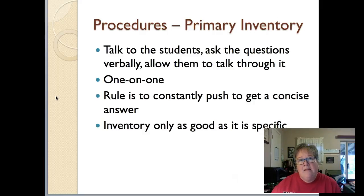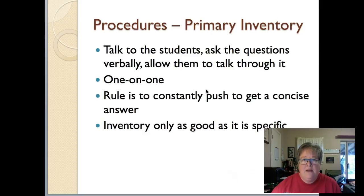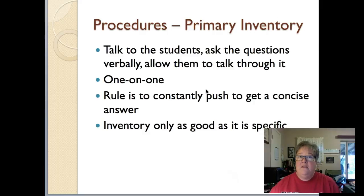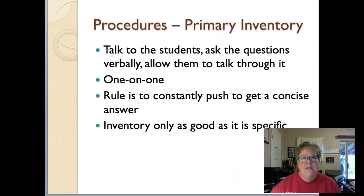With primary level students, ask them the questions verbally and allow them to talk through it. Best to do this one-on-one, and you want to take down what they say. The rule is to constantly push to get a concise answer — get as specific as you can. For example, do you like sports? Yes. What kind of sports? I like football. Don't stop there — keep going. What's your favorite football team? Who's your favorite player? What position do you like to play? Or if they say they like to dance, ask what kind of dance. There's a big difference between ballet and hip-hop — heaven forbid they like ballet and you give them a book on hip-hop dancing. So you constantly want to get a concise answer. The inventory is only as good as it is specific.